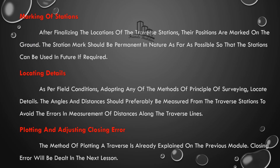Marking of station: after finalizing the location, you can mark where you are on the ground. Locating details: fielding conditions, methods are principled, surveys are principled — angle, traverse line, locating details. Plotting and adjusting and closing errors — we can do all the traverses and adjust all the errors. Plotting and adjusting and closing errors.